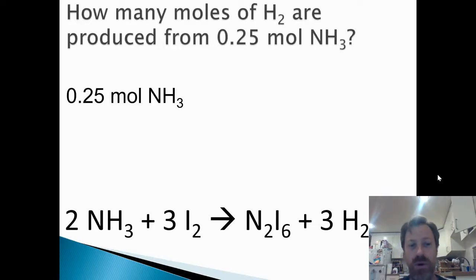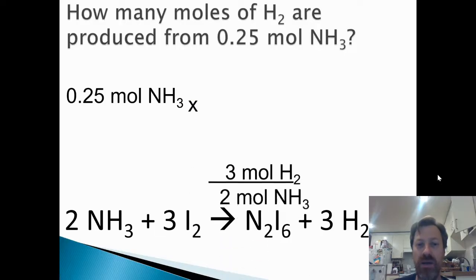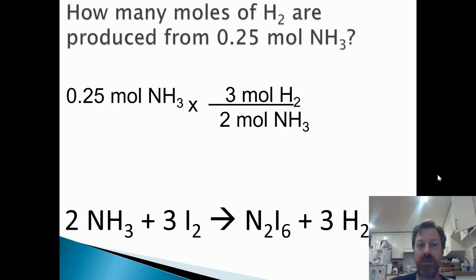So 0.25 moles of NH3. Next, we need the mole to mole ratio. Notice, we want moles of H2, and we want to get rid of moles of NH3. Moles of NH3 is what we're starting with. So on the top of the conversion factor has to be the mole to mole ratio with H2 on top. And then the bottom has to be NH3 on the bottom. Notice, we're just getting these numbers here, the 3 for the moles of H2 and the 2 for the moles of NH3, straight from the chemical reaction. Did we set this up correctly? We know if we set this up correctly, if we can cancel out the unit we started with. And indeed, we can. Moles of NH3 on the top, moles of NH3 on the bottom, those cancel out. We're left with moles of H2.